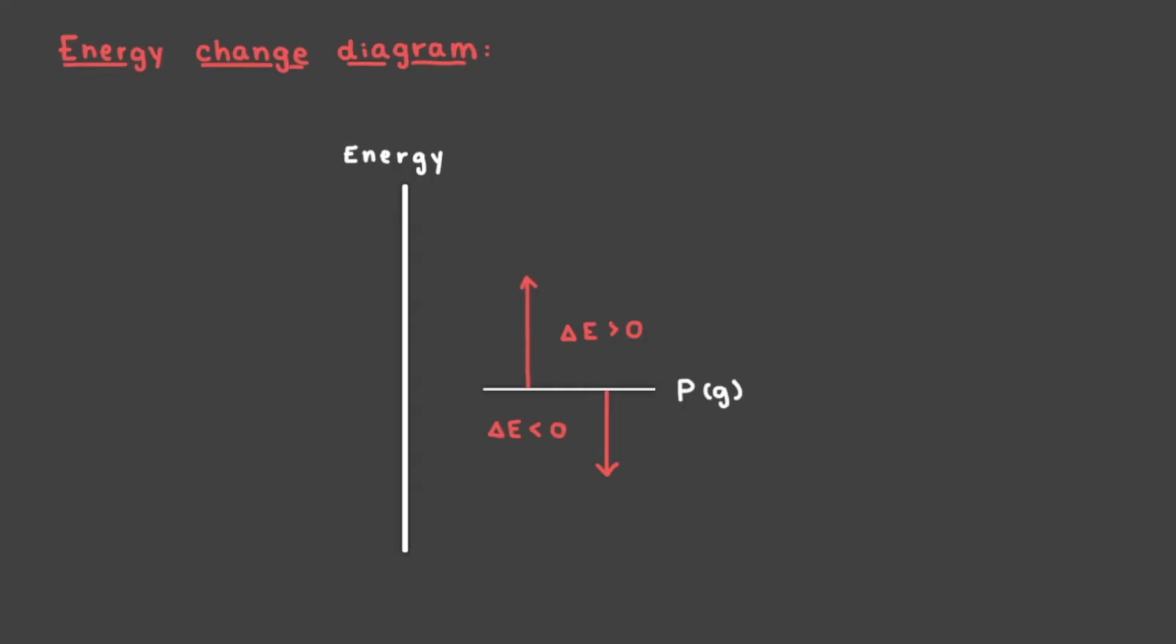If we wanted to add an arrow, starting from our phosphorus atom initial state that represents the ionization of an electron, which direction would the arrow go? That's right, since ionization requires energy to be added, delta E is positive, that means that the arrow goes up from the phosphorus initial state. At the end of this arrow is the new state, the P plus ion. The length of the arrow represents the ionization energy of phosphorus.